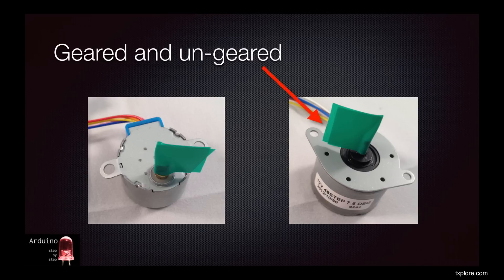Ungeared motors usually come at higher voltage ratings, at least 12 volts. Here is one that I got from eBay for $12 and will also be demonstrated in this lecture.